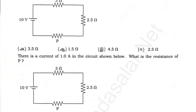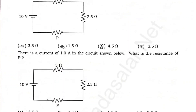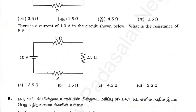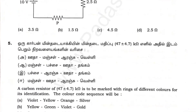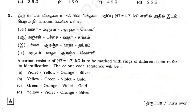There is a current of 1.0A in the circuit — what is the resistance? The carbon resistor is to be marked with rings of different colors for its identification. The color codes will be like this.